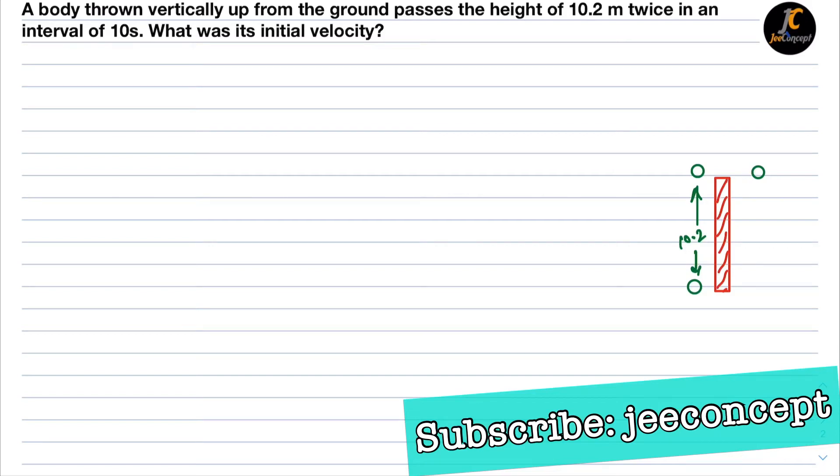Hello friends, in this video we will solve a question which says a body thrown vertically up from the ground passes the height of 10.2 meters twice in an interval of 10 seconds. What was its initial velocity?